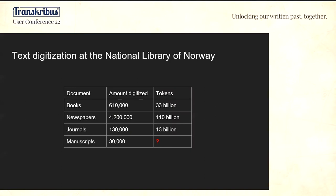As many of you know, the National Library of Norway has a vast digitized digital collection. In 2005, we started the digitization program with the ambition to digitize all our collections. As of 2021-22, in terms of text material, this goal is within reach. All books, about 600,000, have been digitized, and that is a text corpus of about 33 billion words, which is quite a lot.